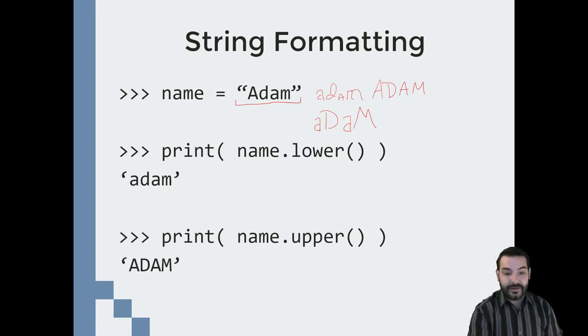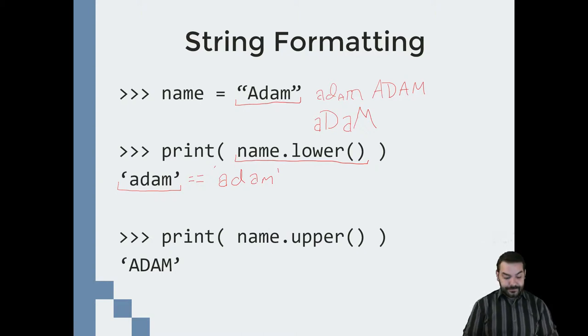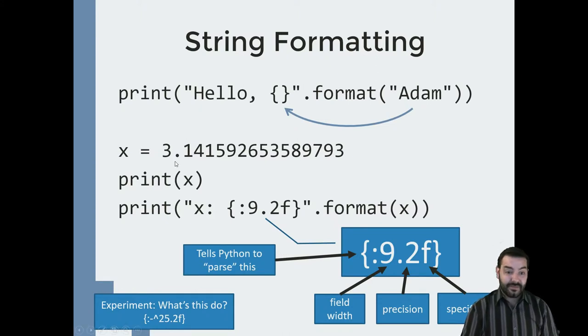So what I can do is I can say something like name.lower(), and now no matter what they type in, everything gets converted into lowercase, which I can then check to see if it equals lowercase. Same thing, I have .upper(). But really when this becomes very beneficial is when I have to format numbers. Let's think about pi for a second - pi is a big number: 3.141592653589793.